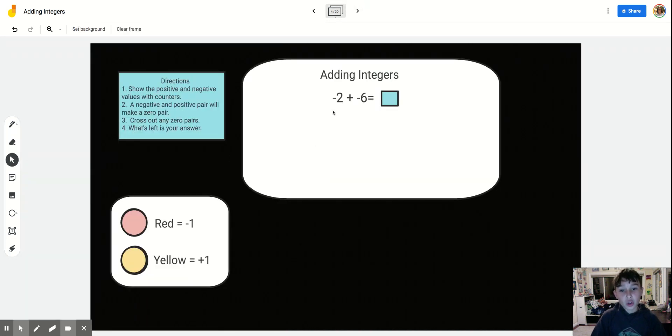So we have negative 2 plus negative 6. 1, 2, and then we're going to have 1, 2, 3, 4, 5, and 6.